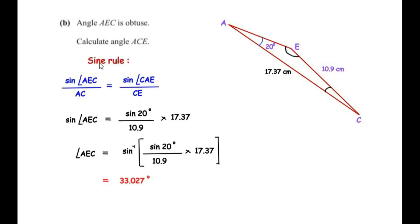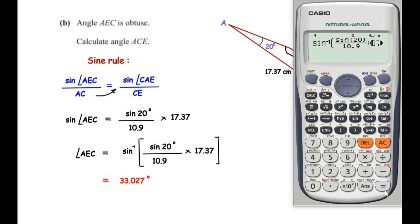We can use the sine rule here. The side opposite to angle A is EC, and the side opposite to angle E is AC (17.37). The sine rule gives us: sin(AEC) / AC = sin(CAE) / CE. Rearranging: sin(AEC) = (sin 20° / 10.9) × 17.37. Taking the inverse sine of the right-hand side gives us the angle.